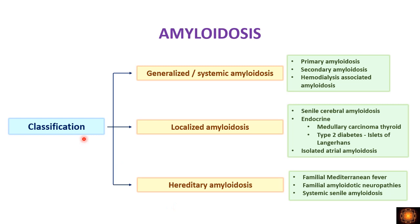For classification, there are three main types of amyloidosis: generalized or systemic amyloidosis, localized amyloidosis, and hereditary amyloidosis. Systemic amyloidosis has three subcategories: primary, secondary, and hemodialysis-associated. Localized amyloidosis includes senile cerebral amyloidosis, endocrine amyloidosis (seen in medullary carcinoma of the thyroid, type 2 diabetes), and isolated atrial amyloidosis. Hereditary amyloidosis includes familial Mediterranean fever, familial amyloidotic neuropathies, and systemic senile amyloidosis.